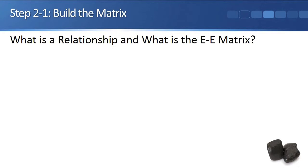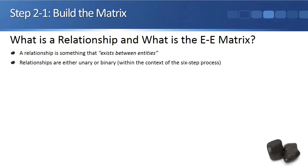What is a relationship and what is the E-E matrix? A relationship is something that exists between entities. Relationships are either unary or binary within the context of the six-step process.